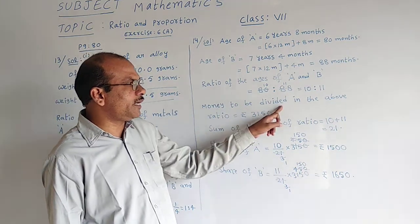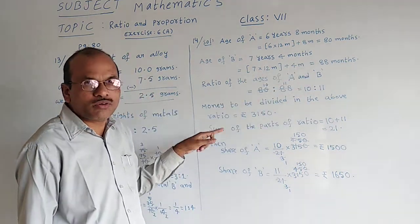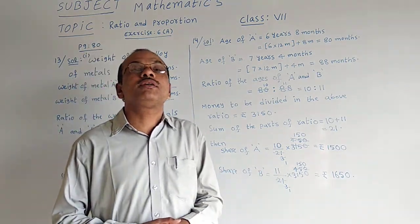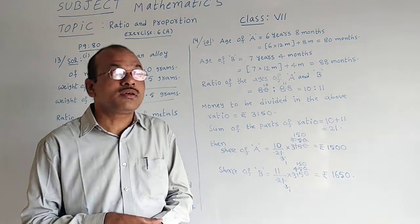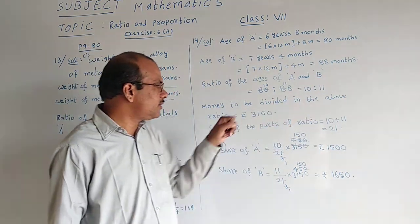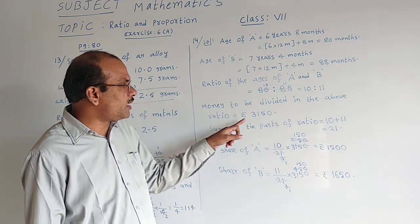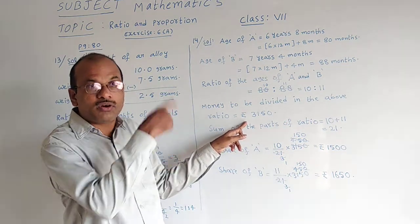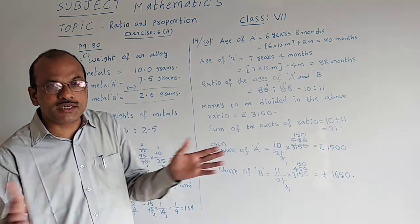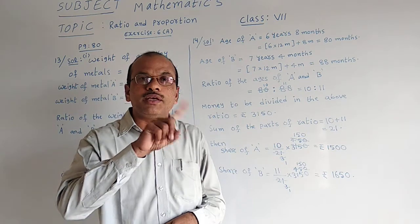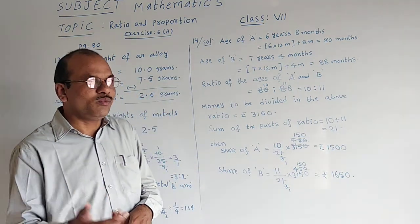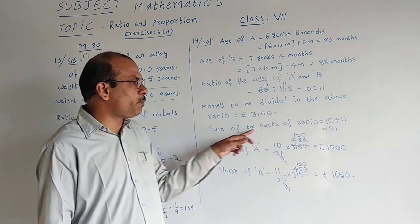Money to be divided in the above ratio. I have told you already some money is going to be given to be divided based on the ratio of their ages. Money to be divided: 3,150 rupees. That should be shared between the two people A and B in the ratio of their ages.